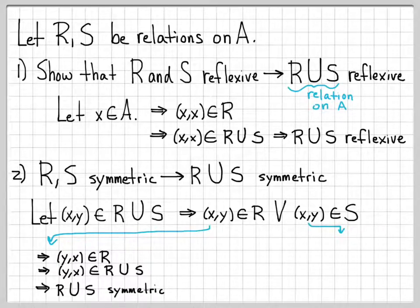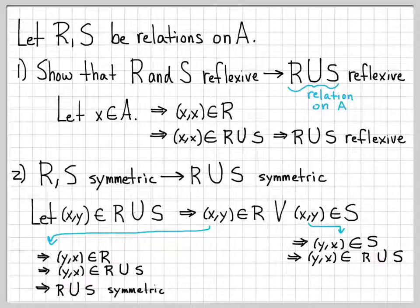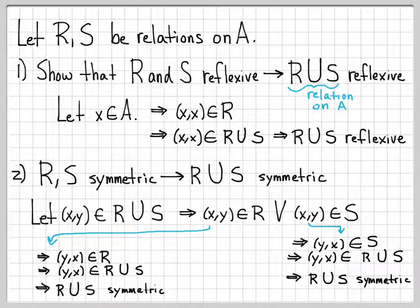What about the other case — what if (x, y) wasn't in R but was in S? We can work through this very similarly. If (x, y) is in S, that means (y, x) is in S because S is symmetric — that's just the definition of a symmetric relation. If (y, x) is in S, then (y, x) is in R union S. Again, if you're already in the set, unioning something else on keeps you in the set. So R union S is symmetric in this case as well.